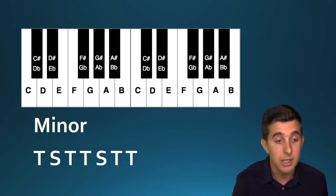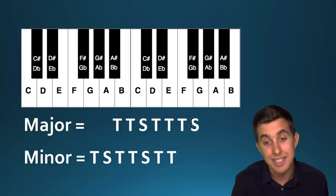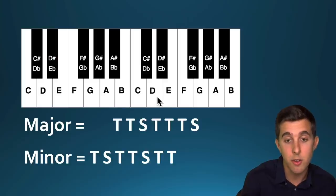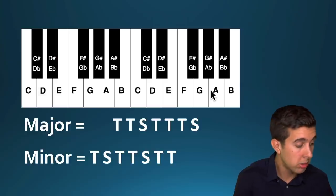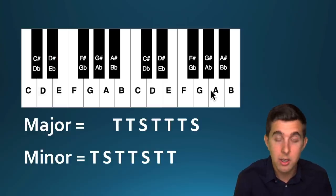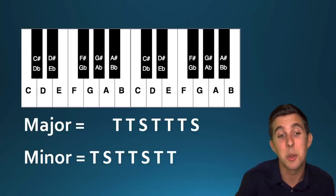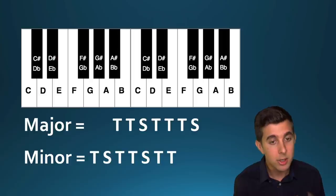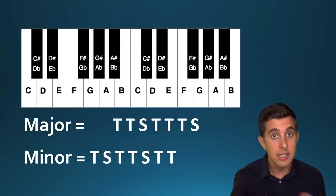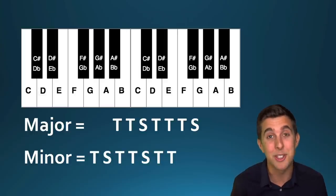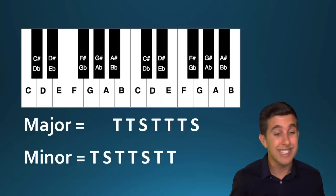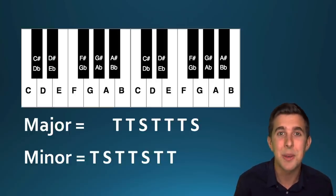So remember: major is T, T, S, T, T, T, S, and minor is T, S, T, T, S, T, T. Or you can just work out the major scale and count up six notes — or go back three notes from the root — to find the natural minor. We do have different types of minor as well: harmonic minor and melodic minor, which I cover in my Complete Music Theory course. But this is really just the basics of a minor scale.